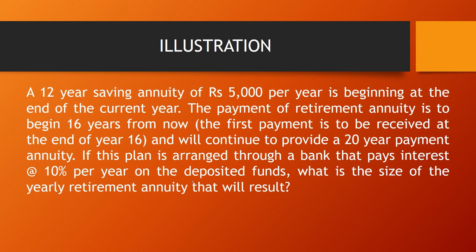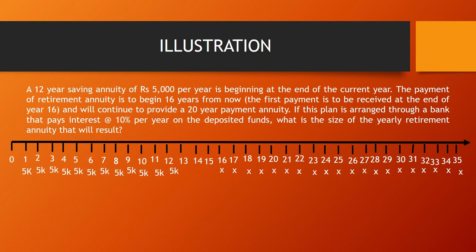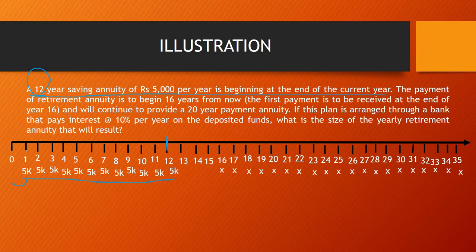Let's understand the question with the help of a number line. The question says a 12-year saving plan of 5000 per year beginning at the end of the current year. At the end of the first year your first payment of 5000 is made, and since you have taken a 12-year saving annuity, you are depositing for 12 years. This forms an annuity: the time period is known (12 years), you deposit at the end of every year (regular interval of one year between periods), so it qualifies as an annuity.